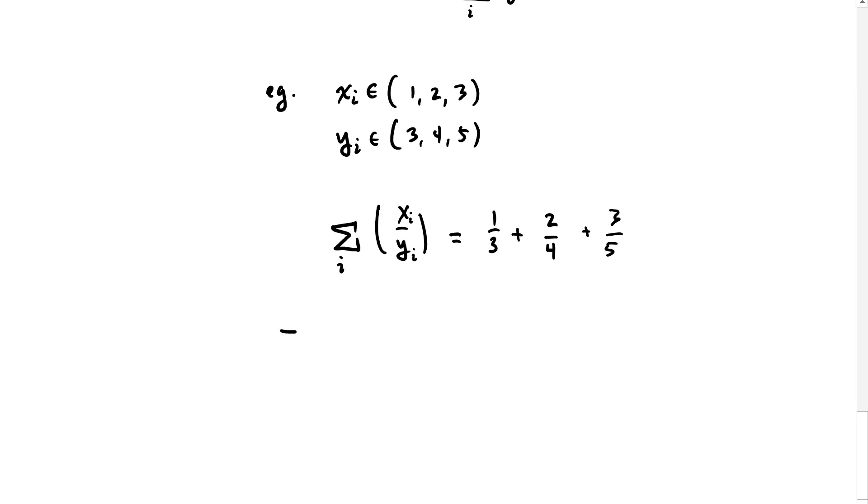That is not going to be equal to the summation of x over the summation of y, because that would be (1 plus 2 plus 3) over (3 plus 4 plus 5). Here you'd have to get the common factors and multiply those all together. Those are not going to be equal to each other.